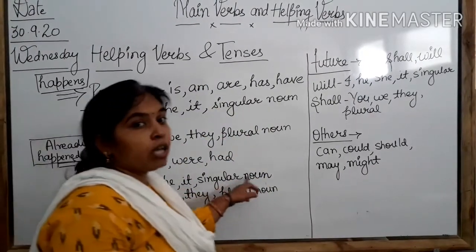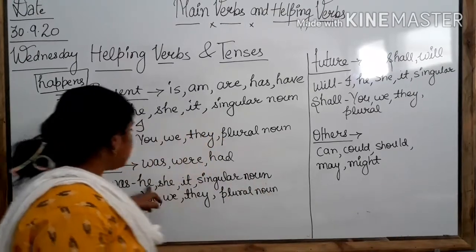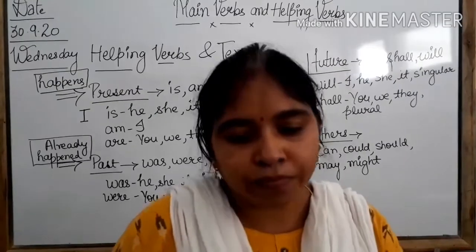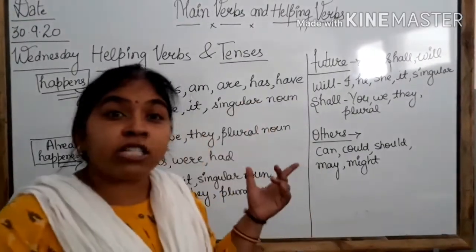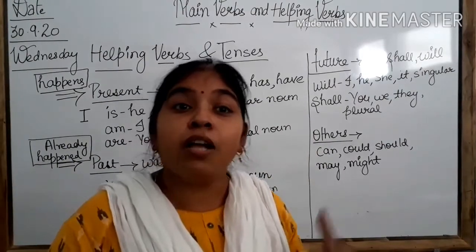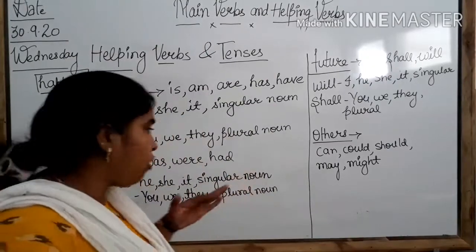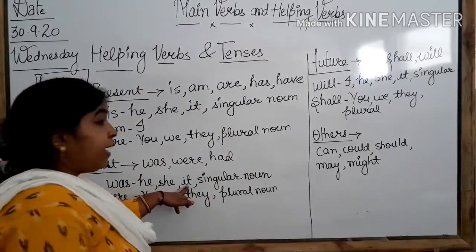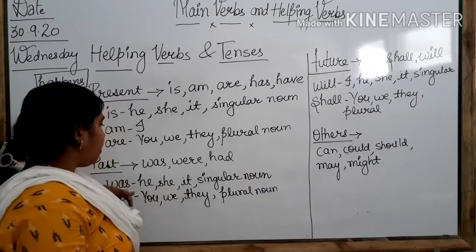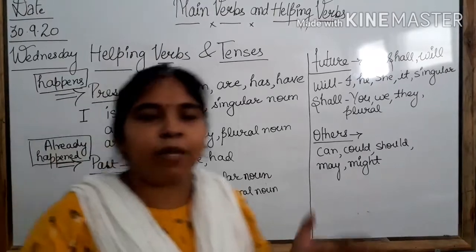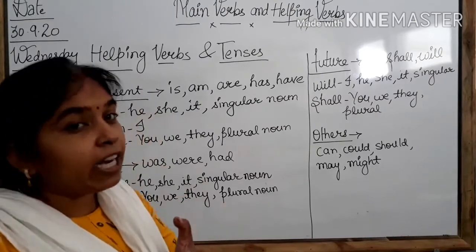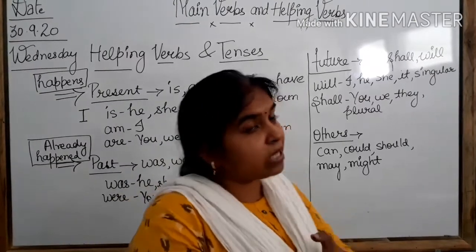For example: 'Yesterday, he was standing.' This sentence belongs to past tense because we are talking about the past — about yesterday, which is already gone. 'It was dancing.' 'She was singing.' So here I am using 'was' helping verb to make a sentence of past tense. When we use 'was,' it means we are making a sentence of past tense.